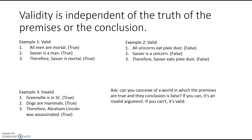Here's another example — look at example three, where everything is true but the argument is not valid: Greenville is in South Carolina. Dogs are mammals. Therefore, Abraham Lincoln was assassinated. All true, but the premises don't provide any logical support for the conclusion. Here's the test: if you want to ask whether an argument is valid, ask whether you can conceive of a world in which the premises are true but the conclusion is false. If you can, that's an invalid argument; if you can't, it is valid. Can you conceive of a world where Greenville is in South Carolina and dogs are mammals, yet Lincoln was not assassinated? Yes — that's totally conceivable, which is why that's not a valid argument.